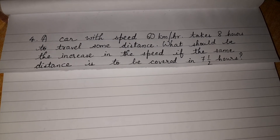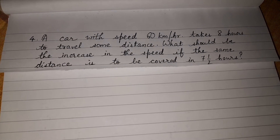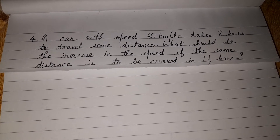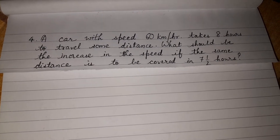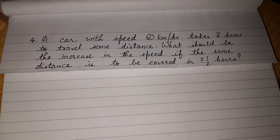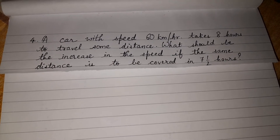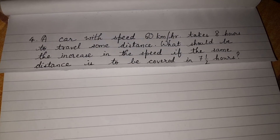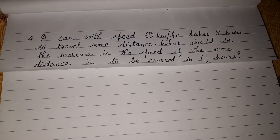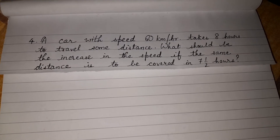First we need to check whether this is direct proportion or indirect proportion. When the speed increases, the time taken to travel that distance will get reduced. One quantity increases, another quantity decreases — so this is an inverse proportion.